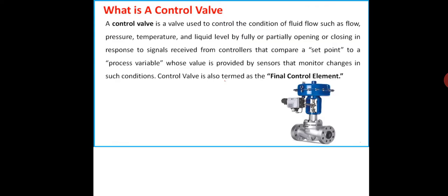A control valve is a valve used to control the condition of fluid flow — such as flow, pressure, temperature, and liquid level, or any physical parameter — by fully or partially opening or closing in response to a signal received from the controller. The controller compares a set point to a process variable whose value is provided by a sensor. A control valve is also termed the final control element.